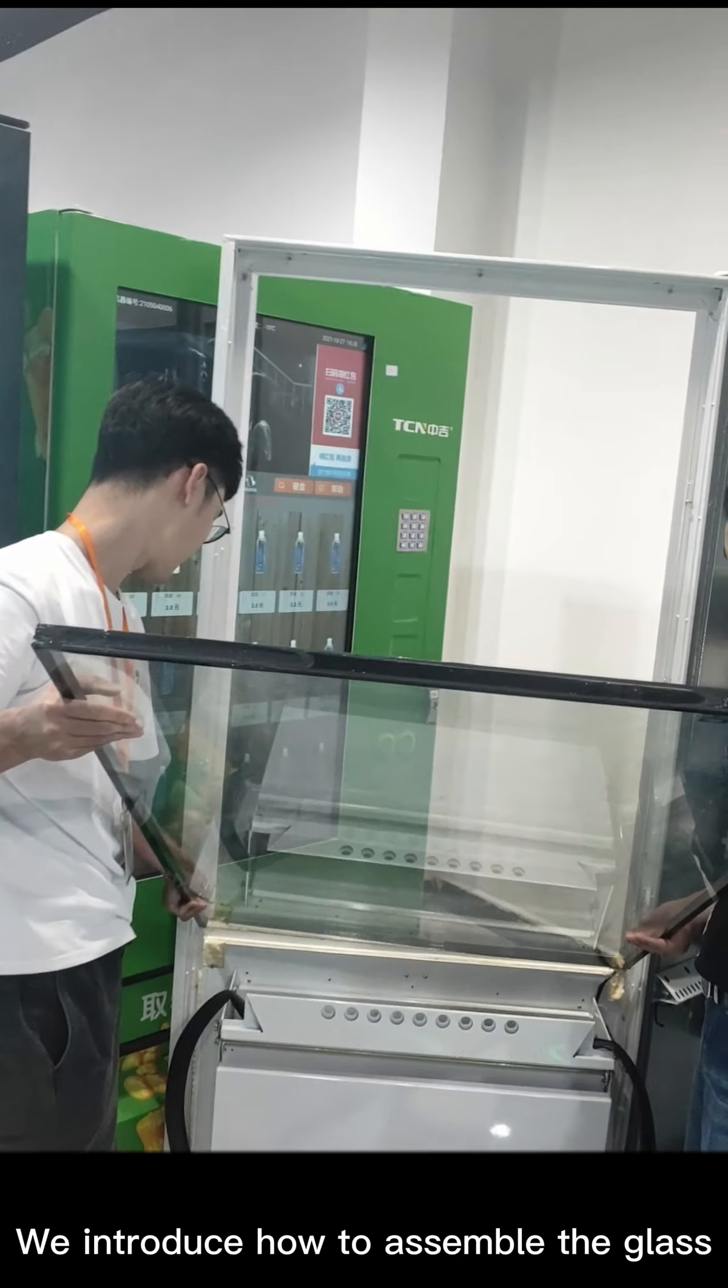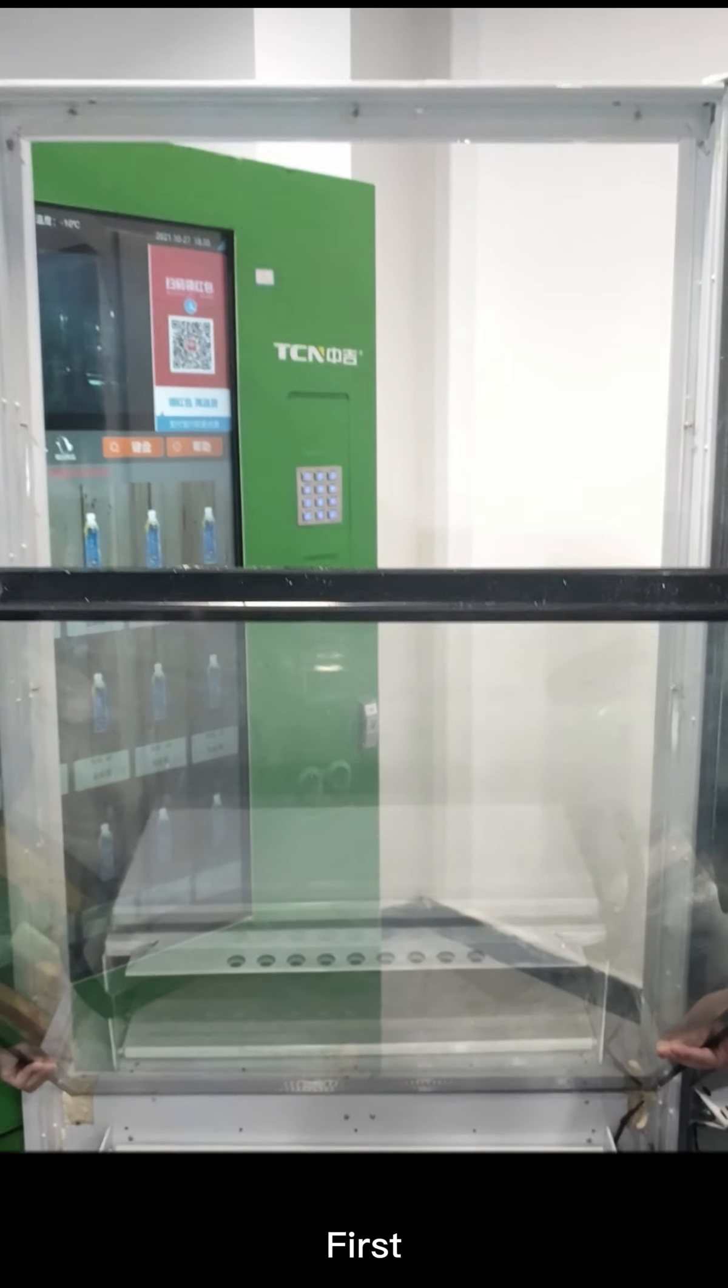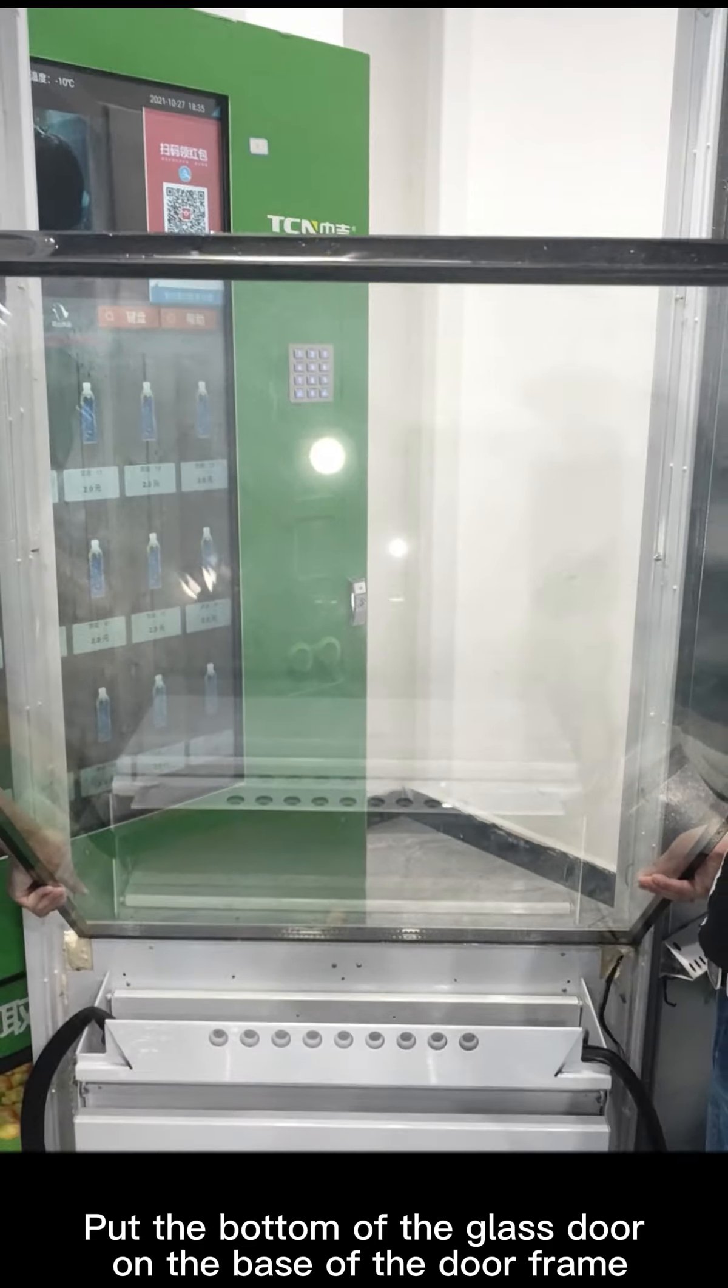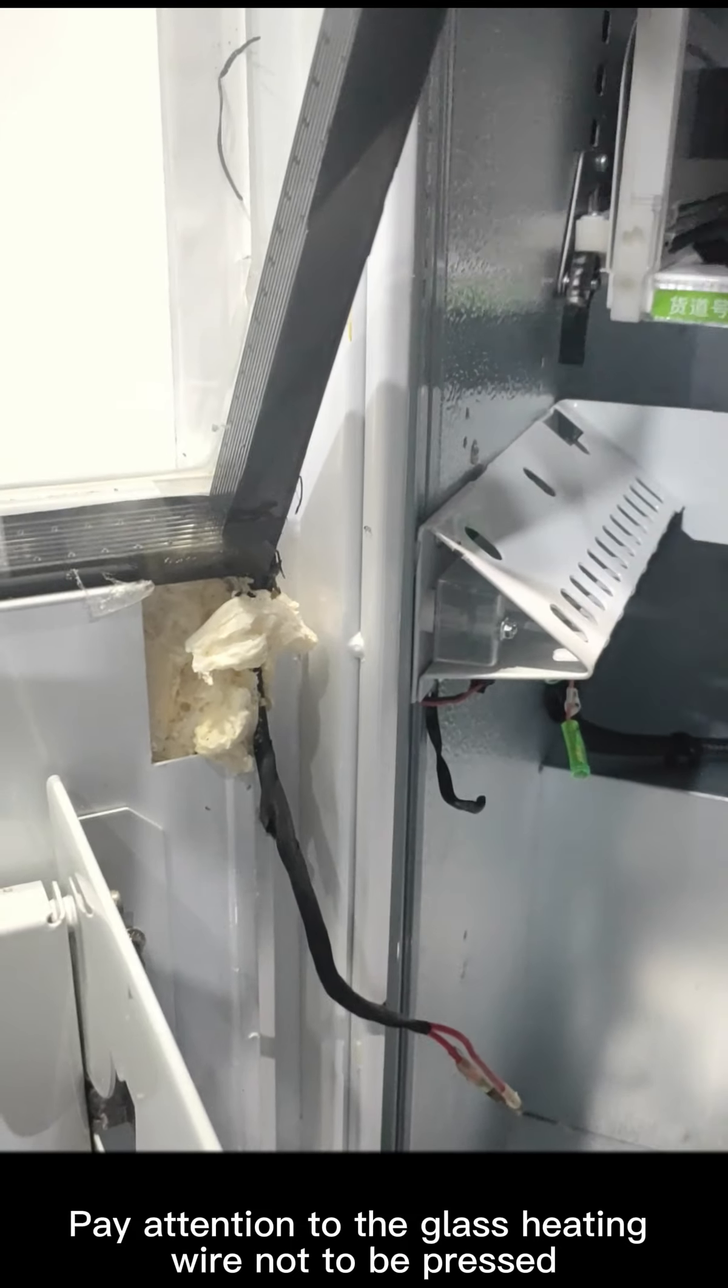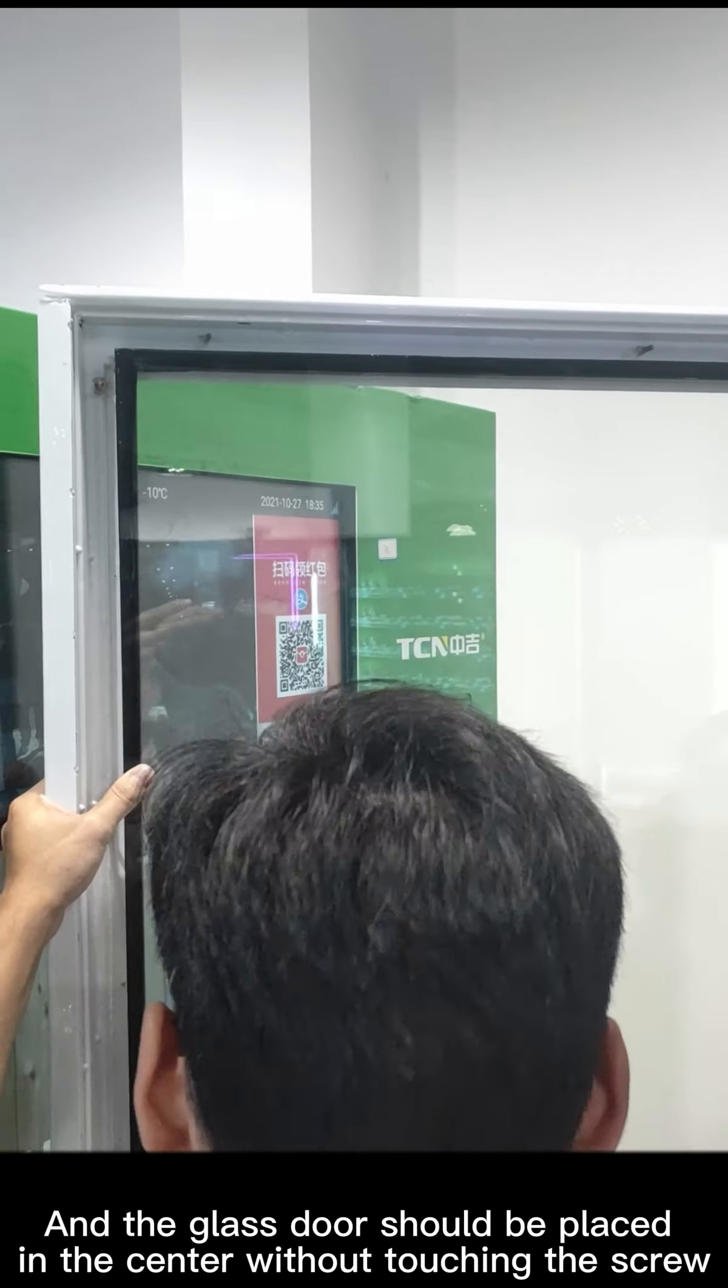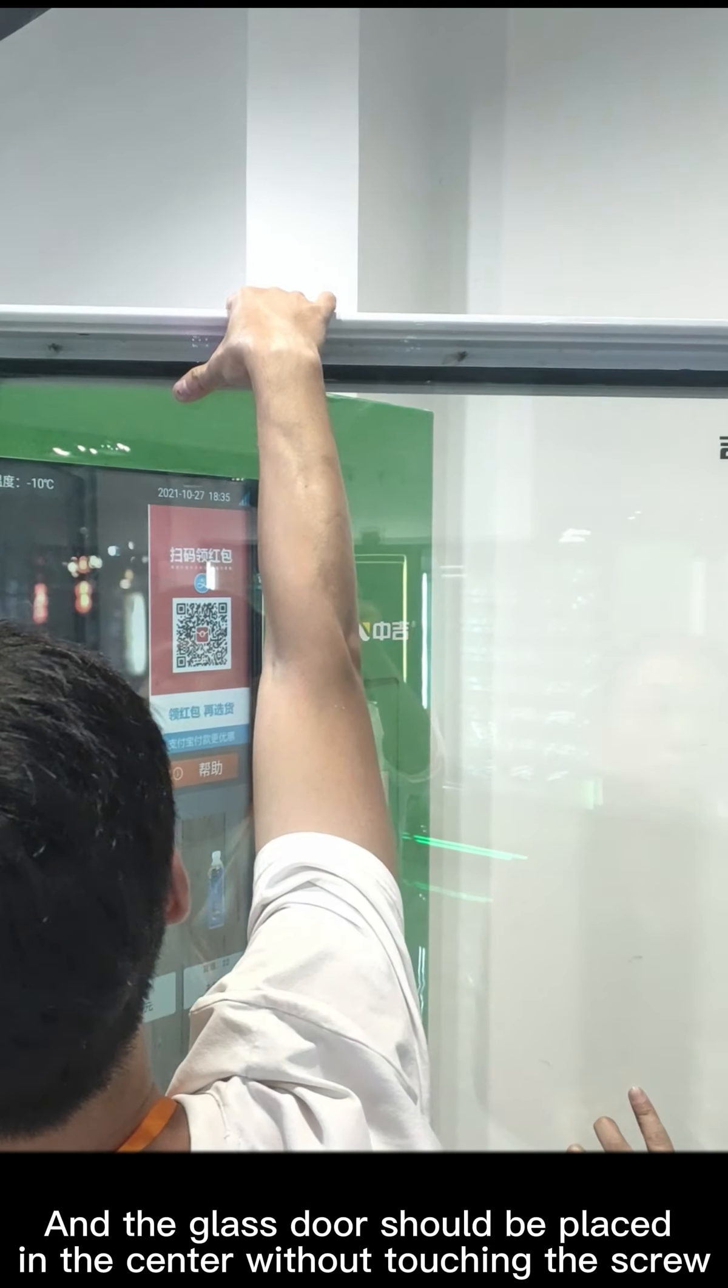Next step, we introduce how to assemble the glass. First, put the bottom of the glass door on the base of the door frame and slowly put it on. Pay attention to the glass heating wire not to be pressed, and the glass door should be placed in the center without touching the screw.